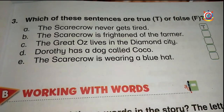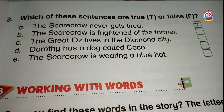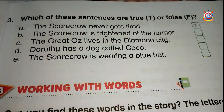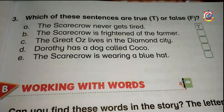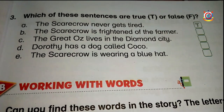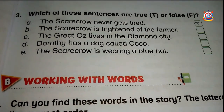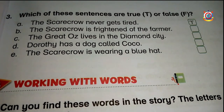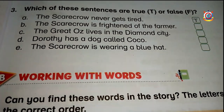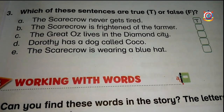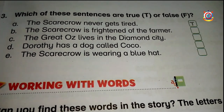The next sentence is: the Scarecrow is frightened of the farmer. Is he frightened of the farmer? No — very good. He is frightened of a lighted match. In this sentence they say the Scarecrow is frightened of the farmer, so what would you write here? Very good — you will write F here because it is false. This sentence is completely wrong, so we will write F in the second box.